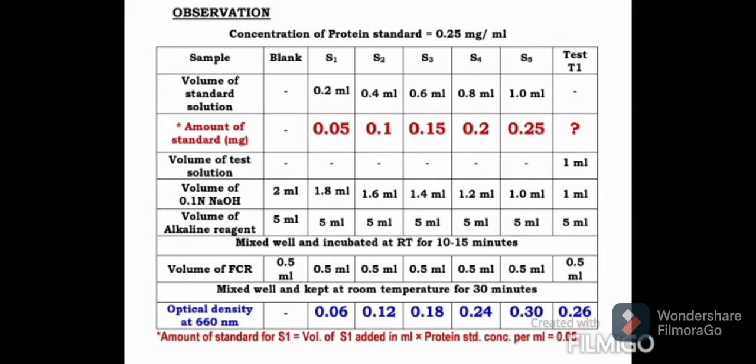This is the observation table. You can see the volume of reagents added given in the first column. In the last row, ODs of standards and test T1 are given in the second row. Amounts of standards added are given in red color, which is actually the value of the standard concentration 0.25 mg per ml multiplied by volume of standard added in mls to each standard tube. This is explained in footnote asterisk. We are using the values of standard S5 ODs of S5 and T1 for further calculations.